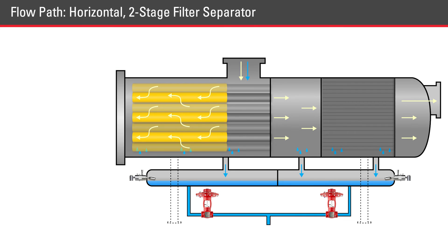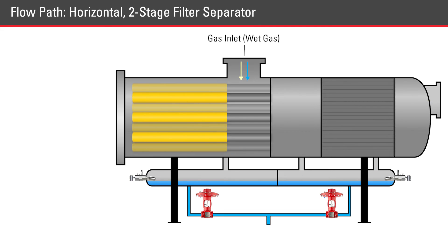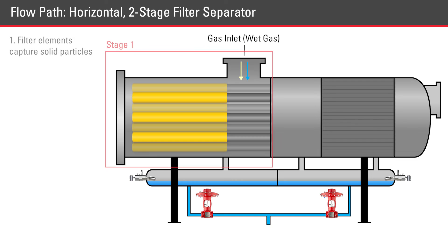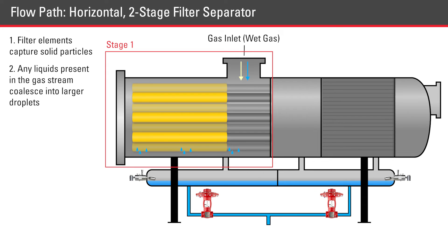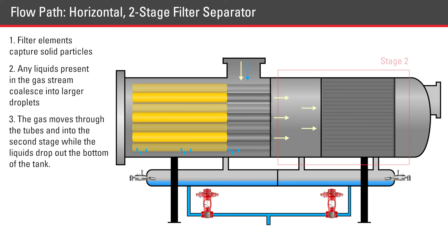This rendering shows the flow of natural gas through a horizontal, two-stage filter separator. As natural gas enters the unit, the first stage of filter elements captures solid particles. In this rendering, coalescing filters are used. These allow any liquids present in the gas stream to coalesce into larger droplets. The gas moves through the tubes and into the second stage while the liquids drop out to the bottom of the tank.